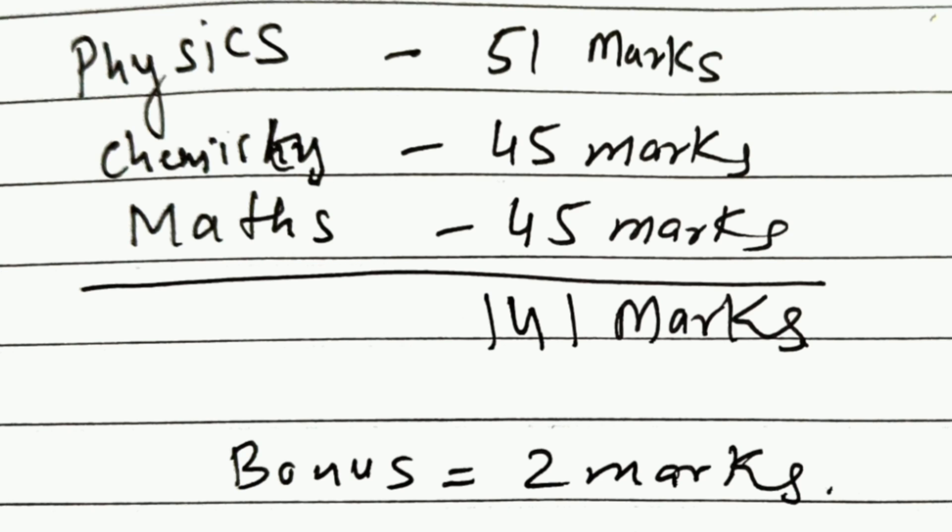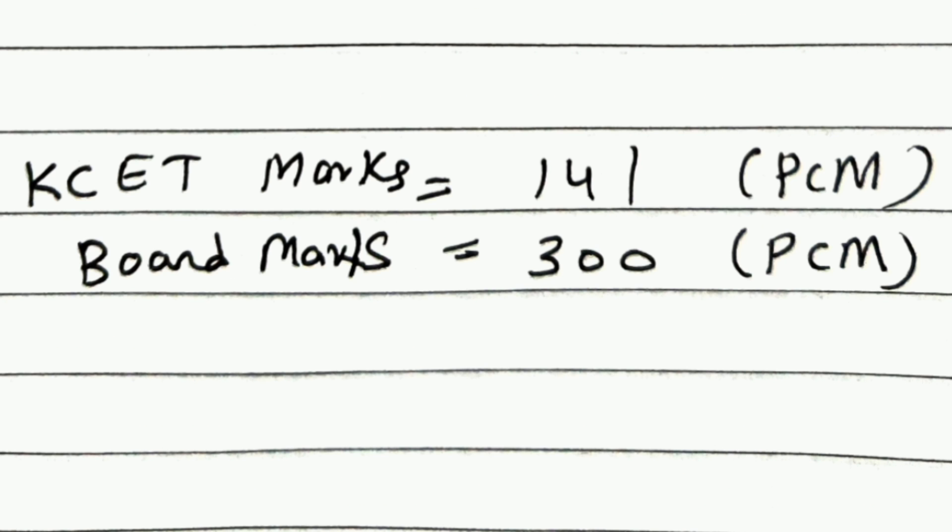Out of which everybody will get 2 marks, which is called bonus marks, right? Out of 141 marks, 2 marks will be minimum, which everyone will get.